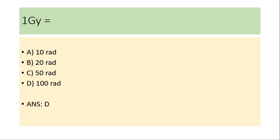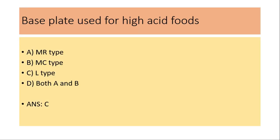1 gray is equal to: (a) 10 rad, (b) 20 rad, (c) 50 rad, (d) 100 rad. The answer is (d) 100 rad. Base plate used for high acid foods: (a) MR type, (b) MC type, (c) L type, (d) both A and B. The answer is (c) L type.